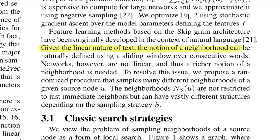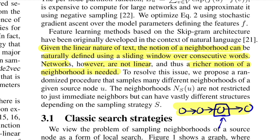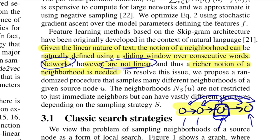In text, a sentence is a linear chain of words, and a sliding window defines the neighborhood for skip-gram: given a word, predict nearby words in the context window. But networks are not linear, so you need a mechanism to convert a nonlinear, potentially hierarchical structure into linear sequences. That is where sampling strategies come in — how you sample defines the richness of the learned representation, balancing DFS and BFS in terms of homophily and structural symmetry.